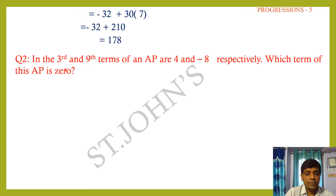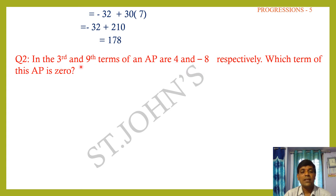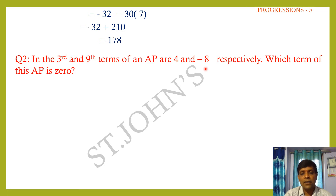Question number 2: The third and ninth terms of an AP are 4 and −8 respectively. So a + 2d = 4 and a + 8d = −8. We must find the common difference and first term, then determine which term is 0.